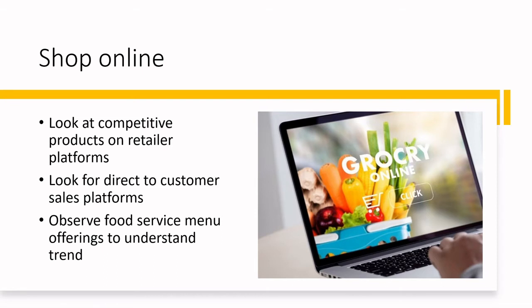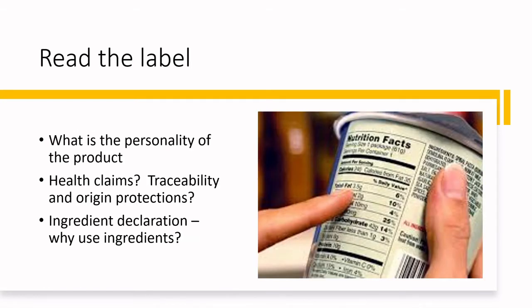Using online observation you can also look at food service trends to understand where your product category may be evolving. For example, if I'm doing ice cream sandwiches, I may look not just at classic grocery retailers but also go to ice cream parlors to see trending styles. I could be looking at Instagram for ice cream sandwiches — what sort of photographs and cool presentations are out there, what flavor combinations people are making at home that are getting a lot of hits. Online is such a rich source of information anymore.